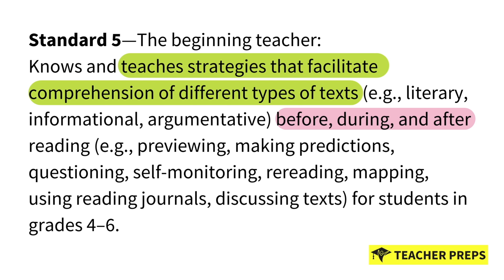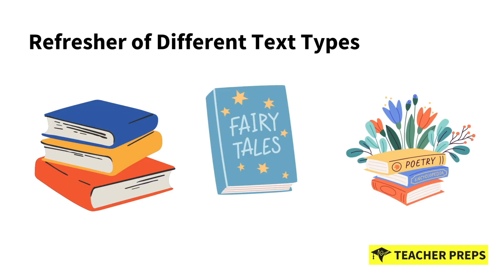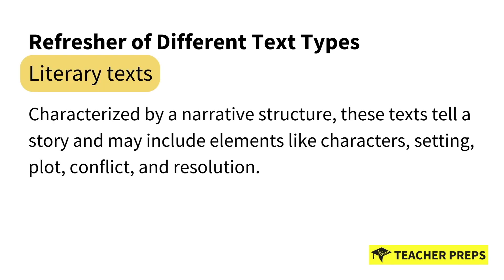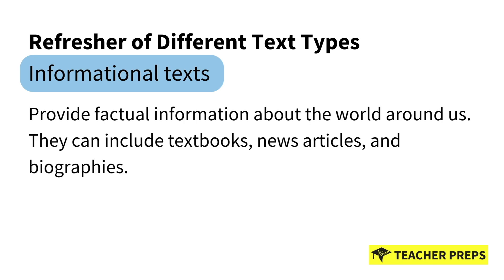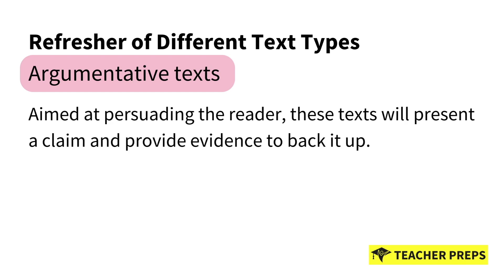Let's dive into this section so you are 100% prepared for test day. Starting with a quick refresher on text types: literary texts are characterized by a narrative structure and may include elements like characters, settings, plot, conflict, and resolution. Informational texts provide factual information about the world — such as textbooks, news articles, and biographies. Argumentative texts are aimed at persuading the reader by presenting a claim and providing evidence to back it up.